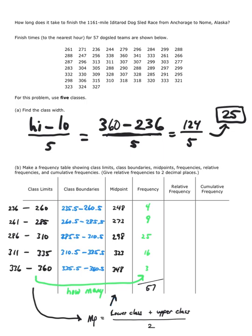When it comes to relative frequency, you take the frequency from that row, divide it by the grand total. So we're going to take 4 divided by 57. In this homework problem we're asked to round to two decimal places, so that's 0.07. 9 over 57, that's rounded as 0.16. 25 over 57, and so forth.